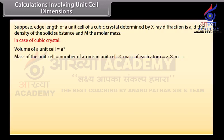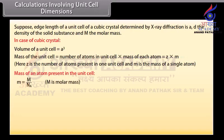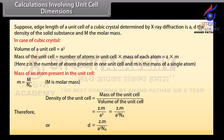The mass of the unit cell equals the number of atoms in the unit cell multiplied by the mass of each atom, which is Z × M, where Z is the number of atoms in one unit cell and M is the mass of a single atom. Since M = M/Nₐ, the density of the unit cell is: D = Z × M / (A³ × Nₐ).